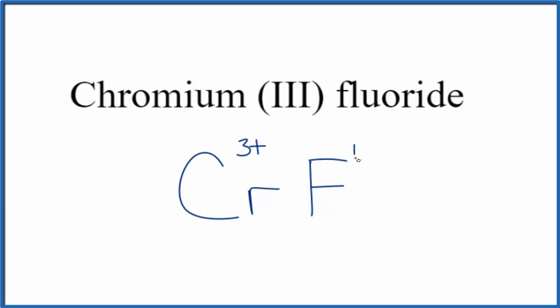That forms ions with a 1- ionic charge. Since chromium fluoride is a neutral compound - it doesn't have the word ion after it - these charges need to add up to zero. We need a net charge of zero.